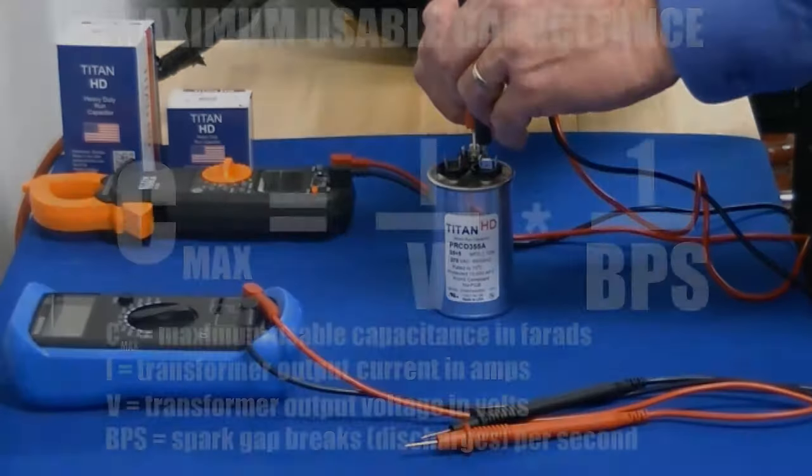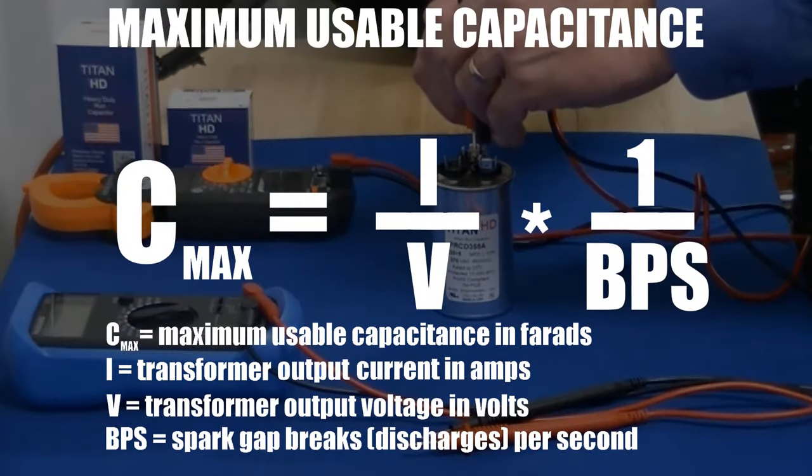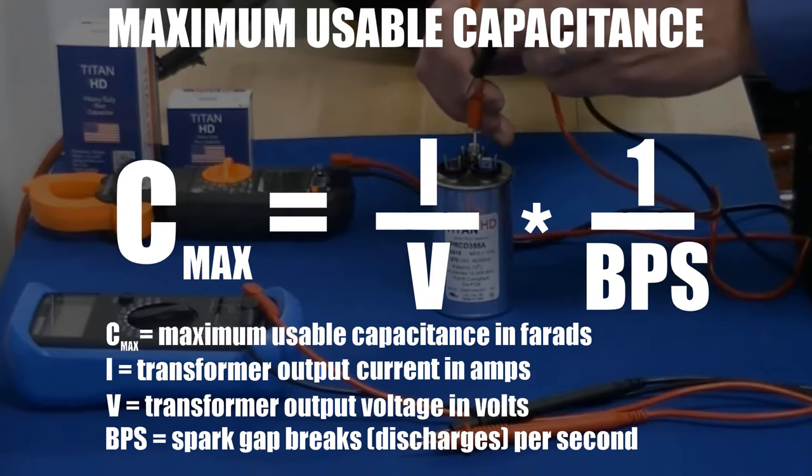The maximum usable capacitance for a given power supply can be found using this simple equation. The closer to this maximum value you get, the better your coil will likely perform.